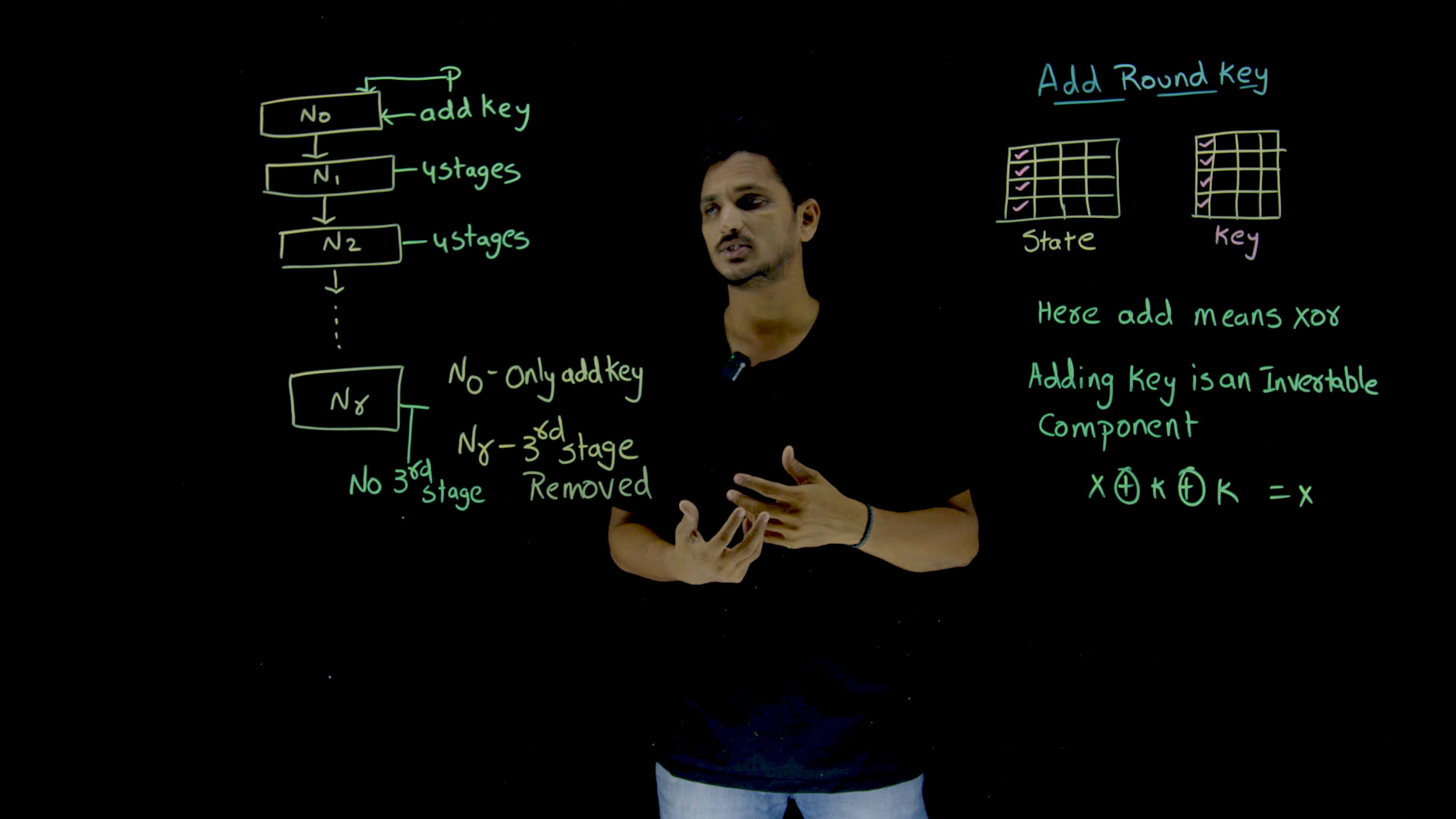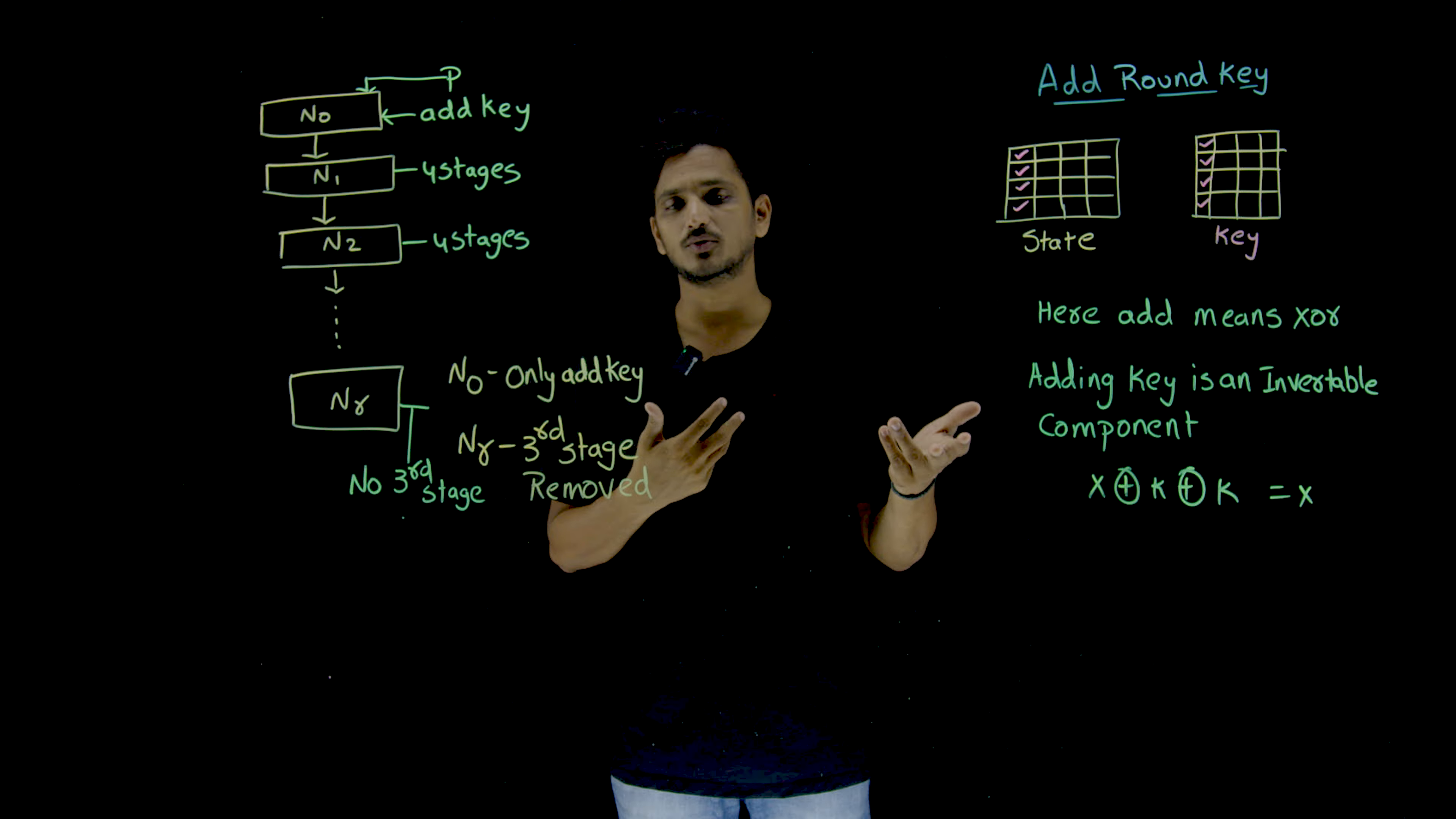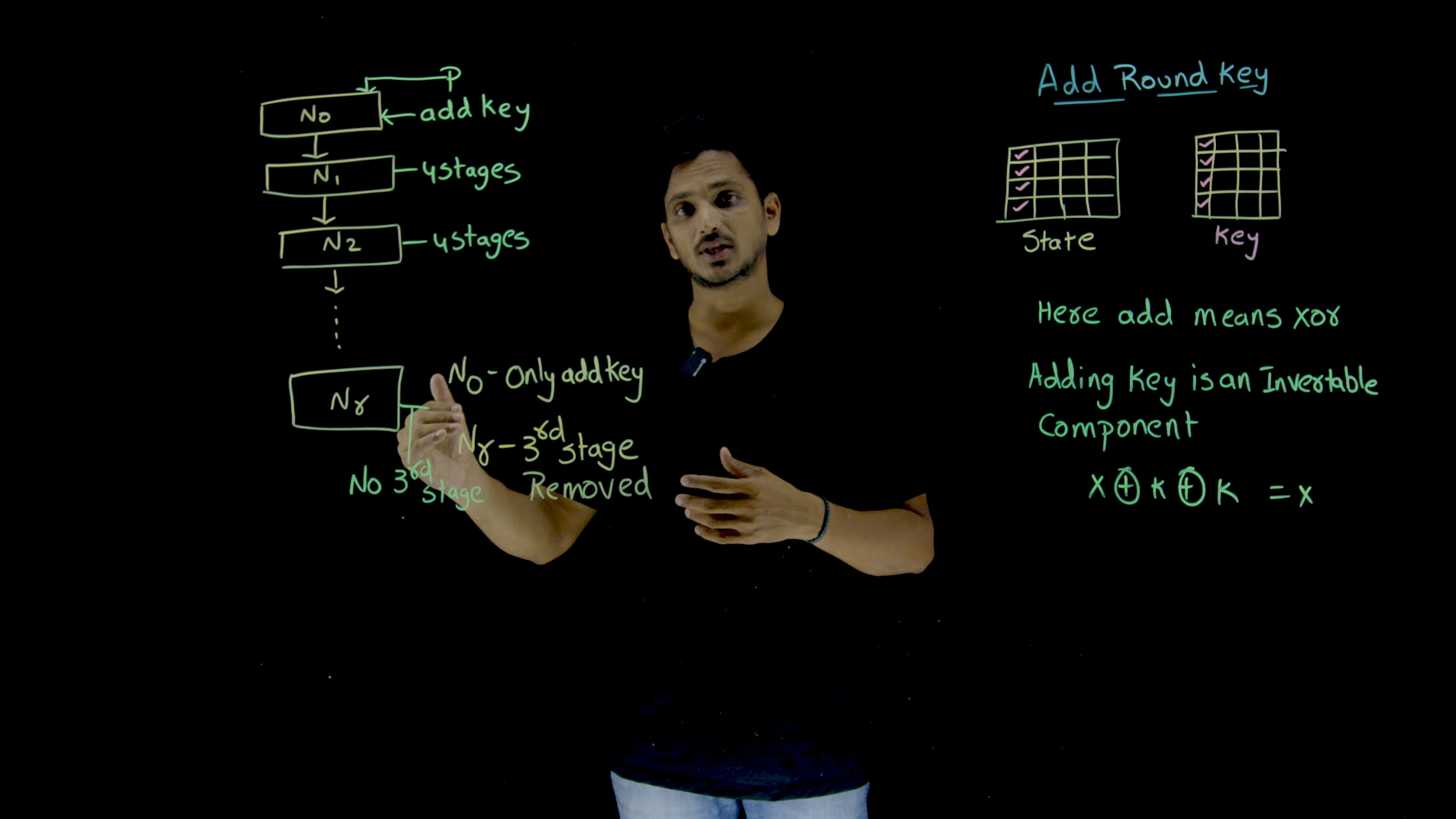And you need to understand few more concepts here. Suppose if you are taking a 128 bit key, how many rounds we are having? 10 rounds we are having. But here we are having 11 rounds plus 1. It starts from N0, N1, N2 so on and the last round is N10. If you take 192 bit key, then you are having 12 rounds. If you take 256 bit key, you are having 14 rounds. Like that it changes. 14 means plus 1. 12 means plus 1. So what happens in the first round? Let's try to understand and we need to understand one more concept here. What happens in the last round also?